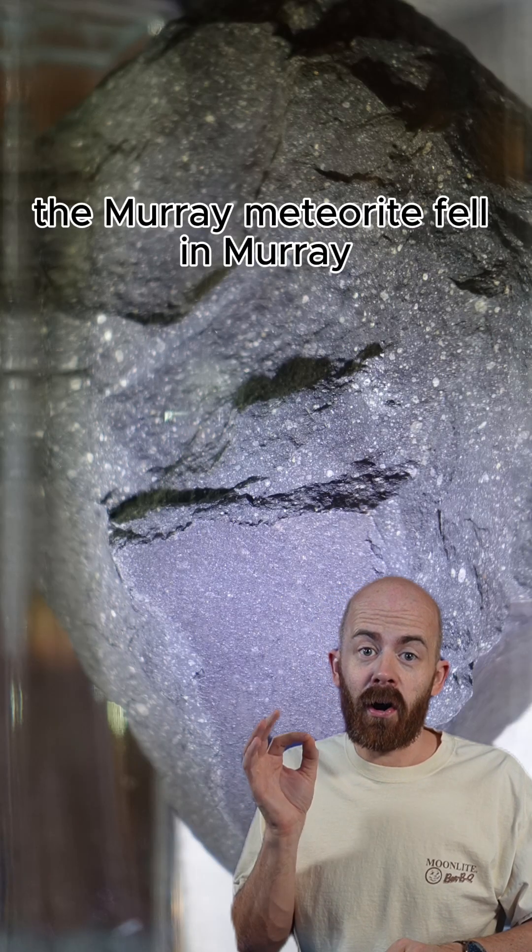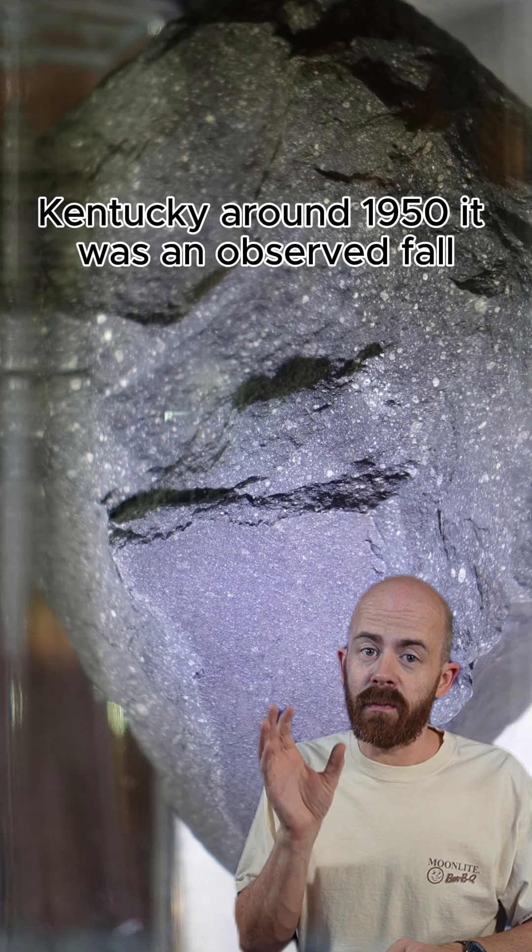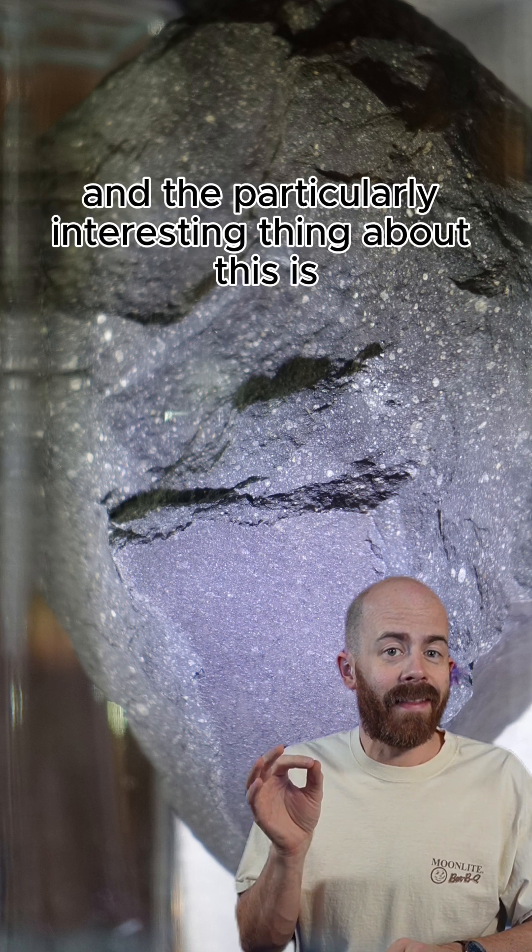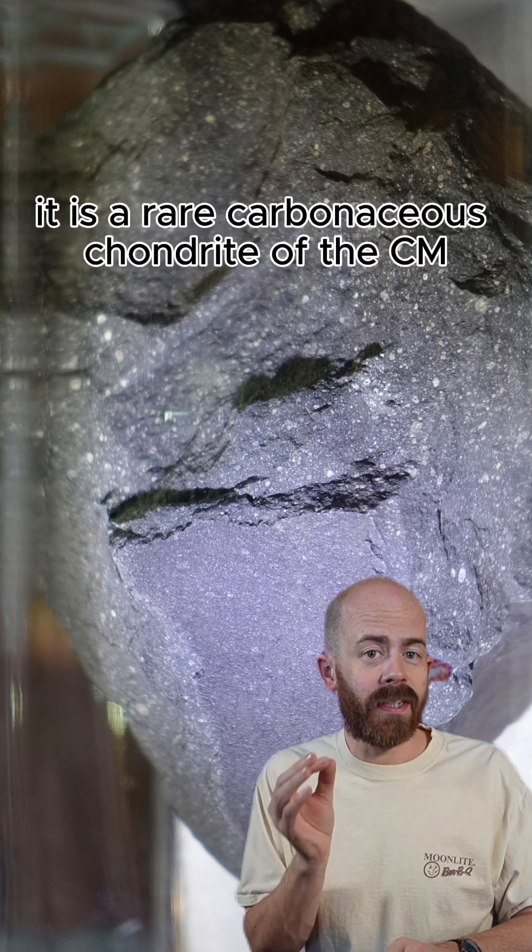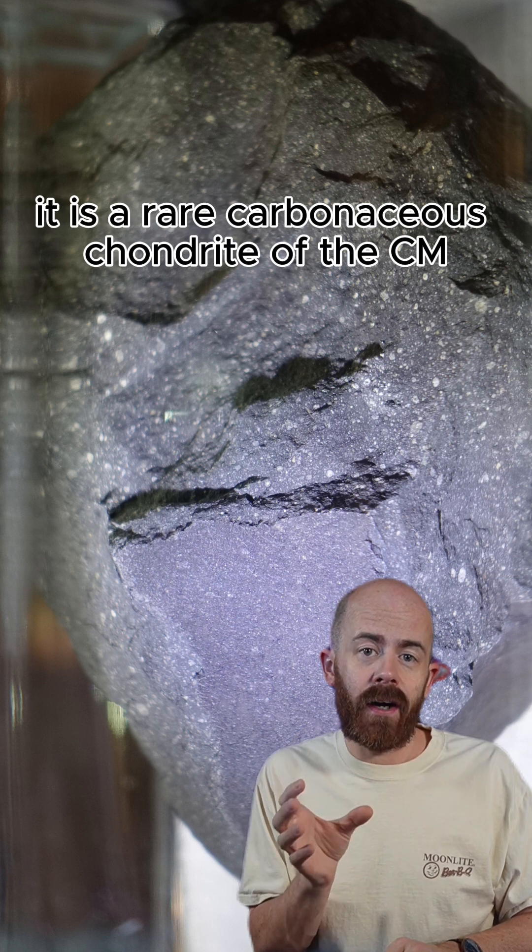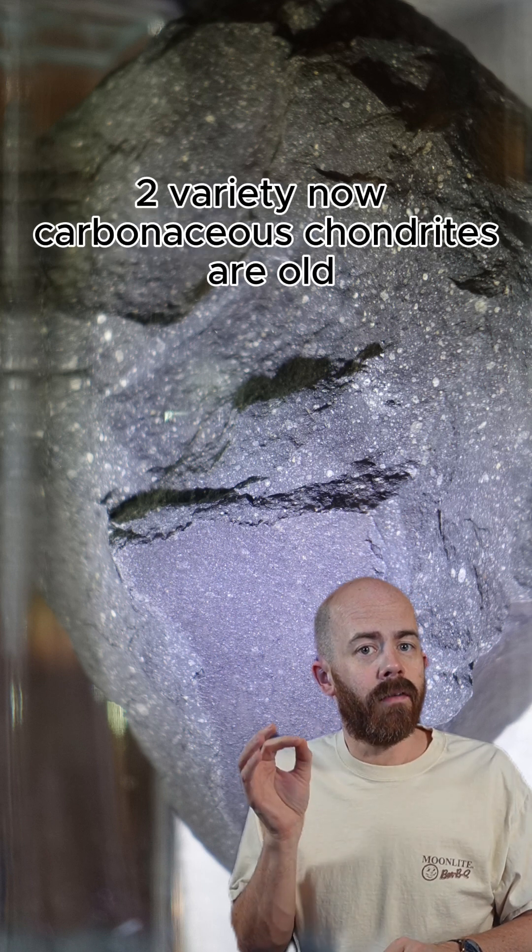The Murray meteorite fell in Murray, Kentucky around 1950. It was an observed fall and it left about 13 kilograms of stone. And the particularly interesting thing about this is it is a rare carbonaceous chondrite of the CM2 variety.